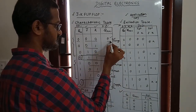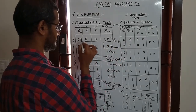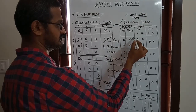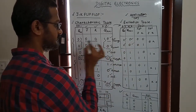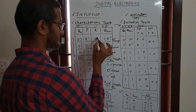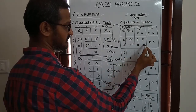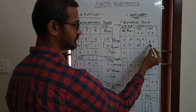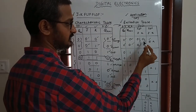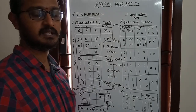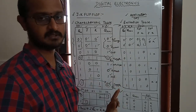Let's derive it. When present state is 0 and next state is 0: J must be 0, and K can be 0 or 1 — so K is marked as x (don't care), meaning x is an indeterminate condition (0 or 1). When present state is 0 and next state is 1, J=1 and K=x.